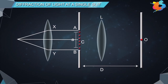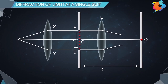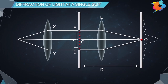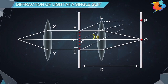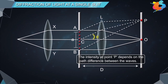Consider a point O on the screen which lies on the perpendicular bisector of the slit. The wavelets that fall on lens L1 parallel to CO converge on point O. Since the waves from these points travel equal distances to reach point O, the phase difference between them will be zero. The waves superpose and produce maximum intensity at O, making point O the location of the central bright fringe. Now consider an arbitrary point P on the screen — all secondary waves from slit AB make an angle theta with CO and reach point P. The intensity at point P depends on the path difference between the waves.